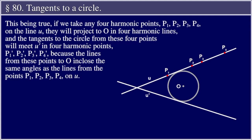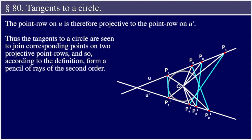This being true, if we take any four harmonic points P1, P2, P3, P4 on the line u, they will project to O in four harmonic lines, and the tangents to the circle from these four points meet u' in four harmonic points P1', P2', P3', P4'.